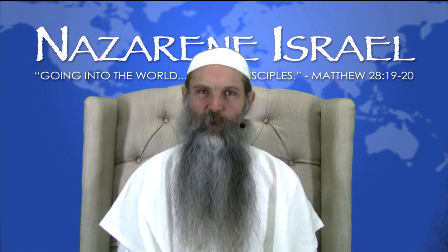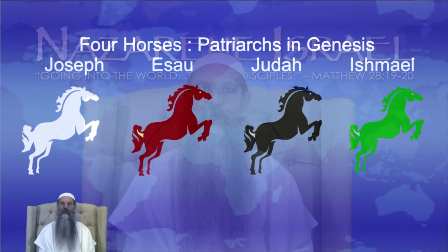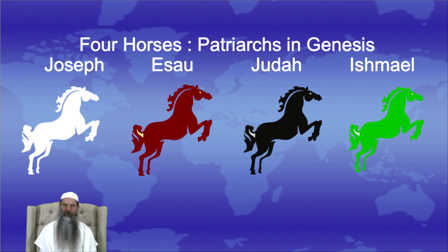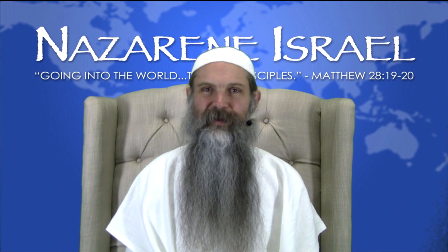As we saw in part one of this video, the four horses of the Apocalypse correspond each one to one of the patriarchs in the book of Genesis. The biblical patriarch Joseph and his two sons, Ephraim and Manasseh, correspond to the white horse or Protestantism. Esau corresponds to the red horse representing Catholicism in Rome, along with some humanism and communism. Judah represents the black horse and Ishmael represents the green horse.